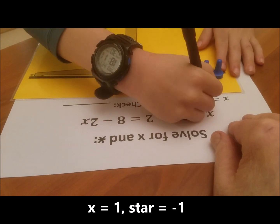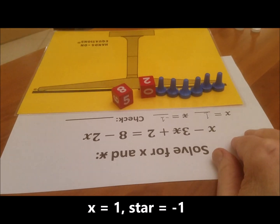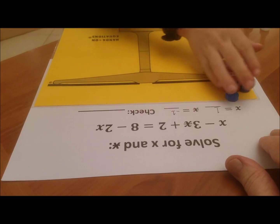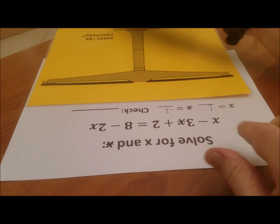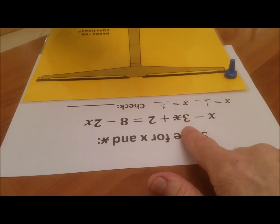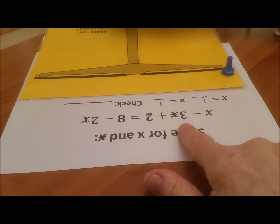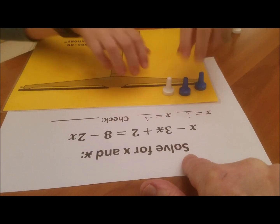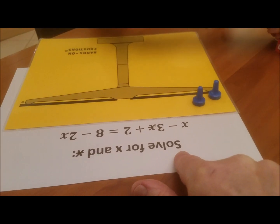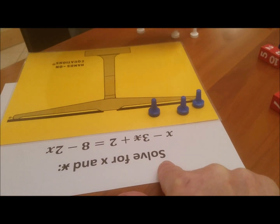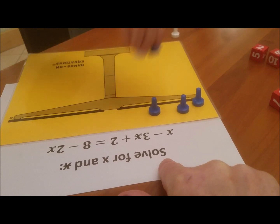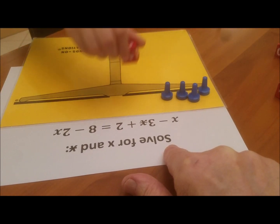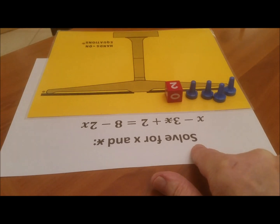Okay, would you now set up the original problem one more time in order to check? Please clear the scale and let's set up the original problem one more time. X, take away three star, plus two, is equal to eight, take away two X.